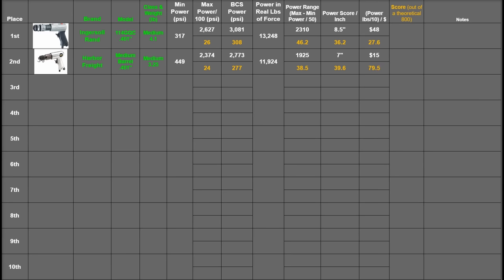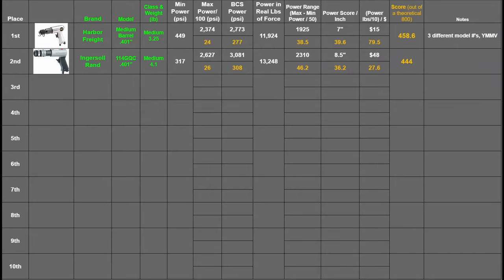This gives the IR a total of 444 points and the Harbor Freight 458.6, bumping it into first place. We can't believe a $15 Harbor Freight air hammer is at the top of one of our rank lists, but it's early days and we have plenty of air hammers to come.